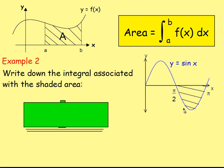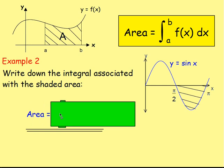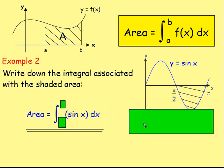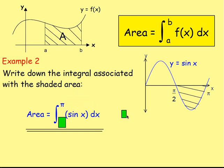Example two: write down the integral associated with the shaded area. Here is your function, y equals sin x. You've got this shaded area, and we're wanting to work out the area between the curve, the x-axis, and pi over 2 and pi. To do that, you need to integrate your function. So the area is going to be the integral of sin x, with upper limit pi and lower limit pi over 2.